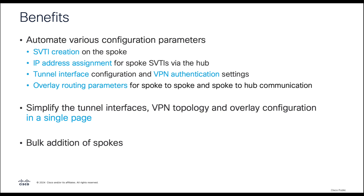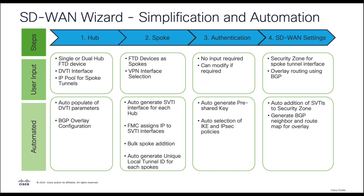In terms of configuration, there are four steps to this SD-WAN wizard. In the first step, we configure the hub devices — either a single or dual hub. Additionally, we configure the dynamic virtual tunnel interfaces and the IP address pools for the spoke tunnels.